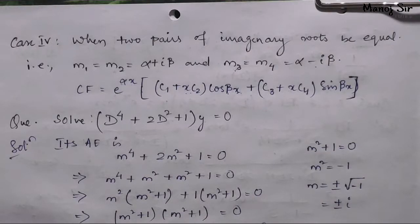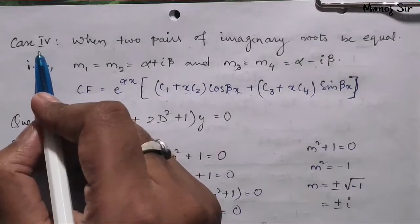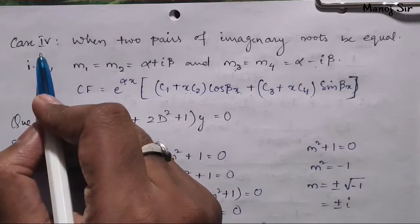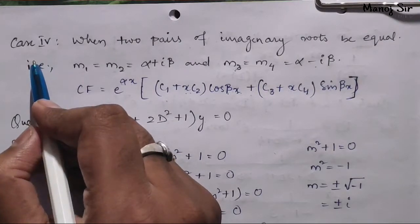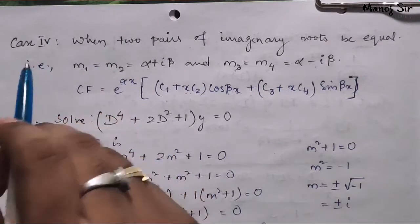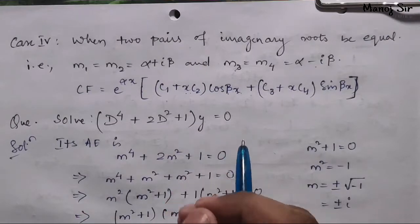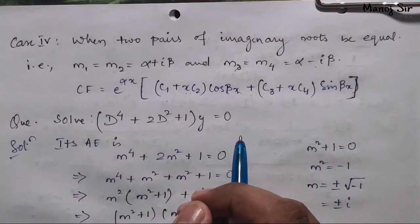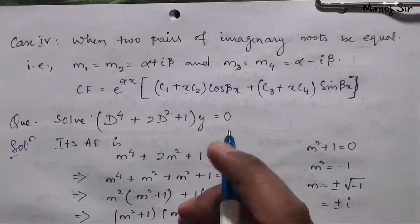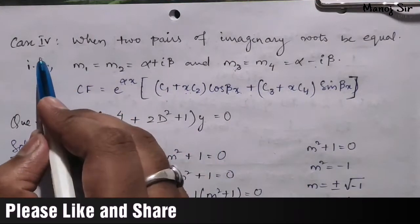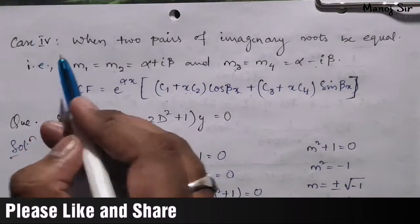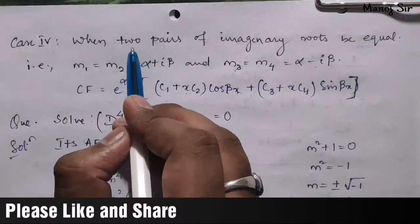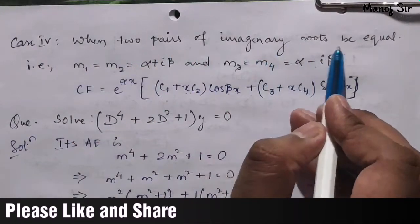Hey guys, this is Manoj sir and I welcome you to my channel. In this video we are going to see Case 4 of rules for finding complementary functions. Case 1 was when the roots are real and distinct, Case 2 was when the roots are repeated, Case 3 was when the roots are imaginary.